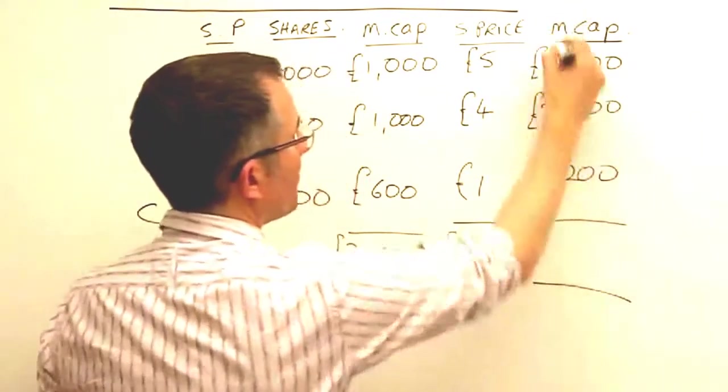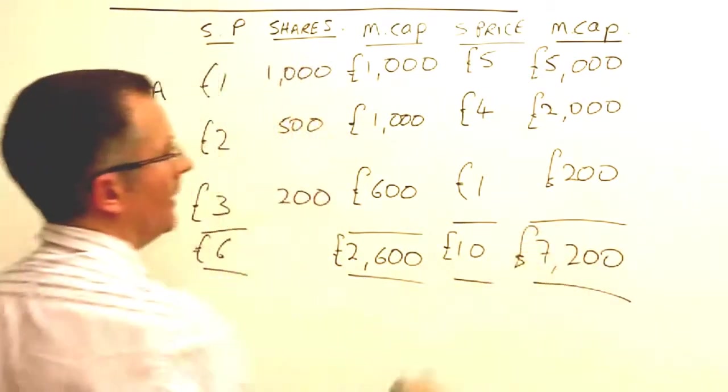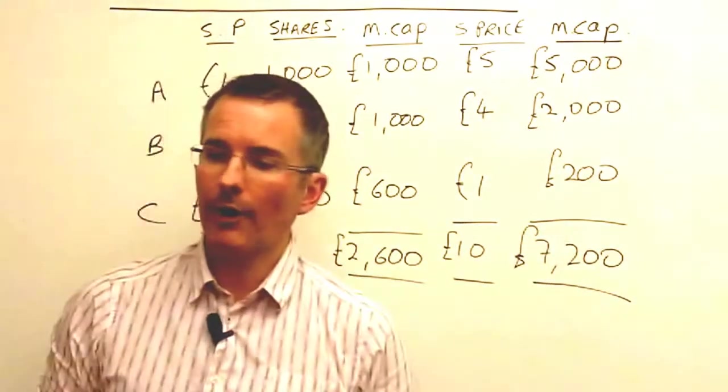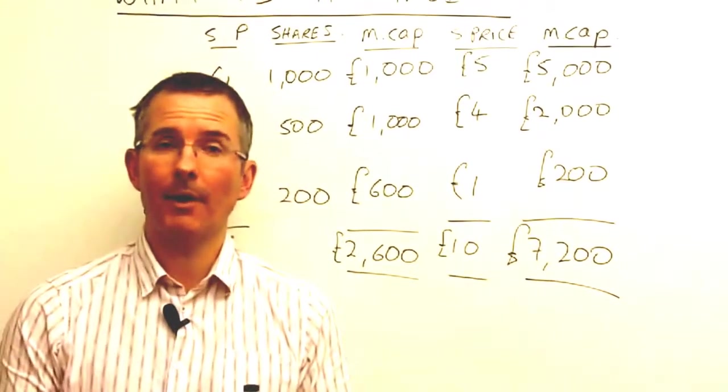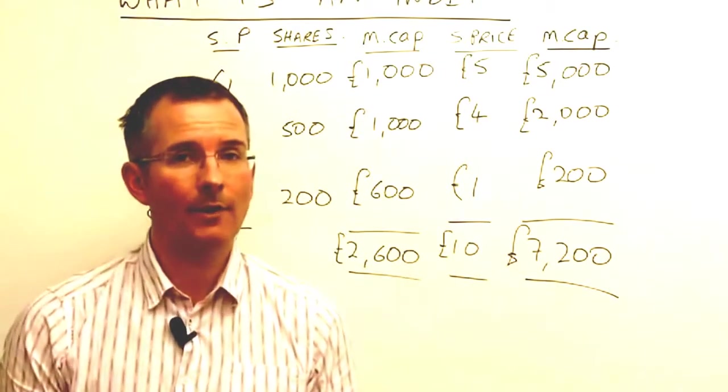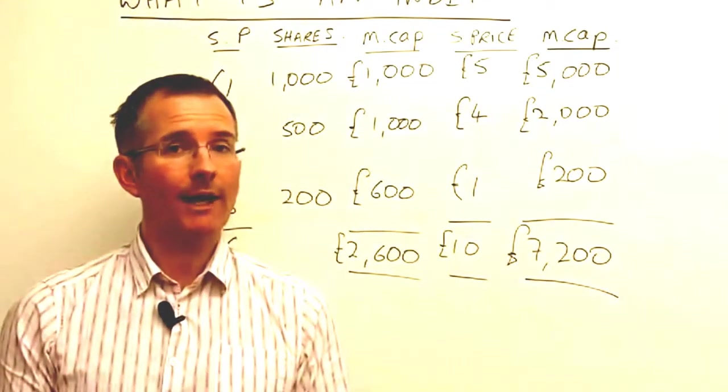So, combine those, £7,200. Now, that's a lot of numbers. And what's the point? Well, here's the question. How do I put an index together that shows the performance of these companies over time? And there isn't one answer to that question. Most indices, like the UK indices, work off market capitalisation.